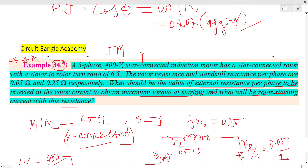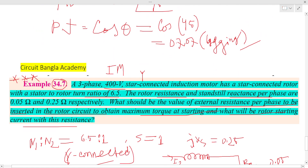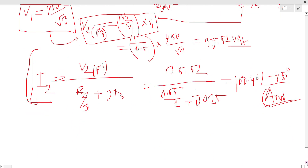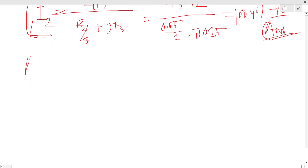For the maximum torque at starting condition: the condition for maximum starting torque is when the external resistance is inserted into the rotor circuit. The condition for maximum torque — the theory states that at maximum starting torque, the slip at maximum torque equals R2 divided by X2.